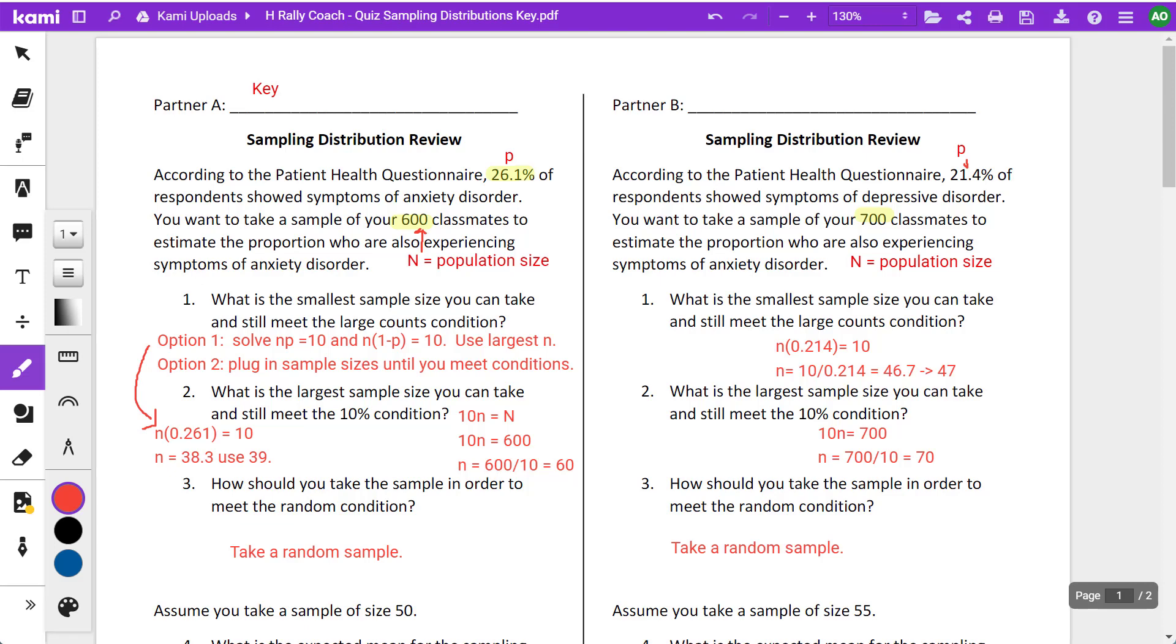Now we'll work on the review for the sampling distribution quiz. So on partner A, we'll start with that one.